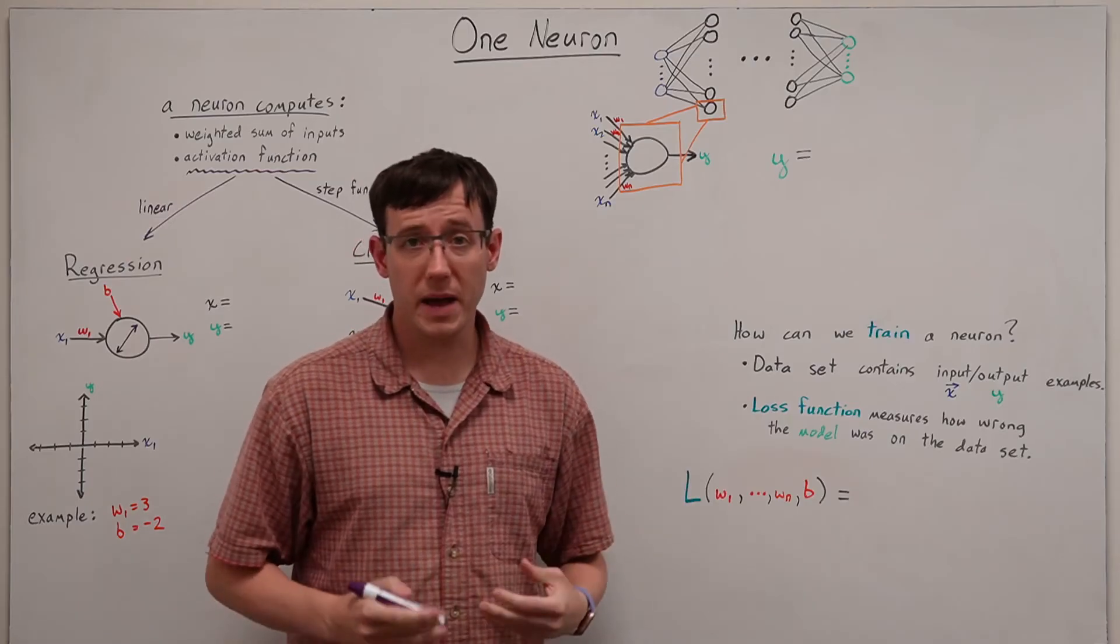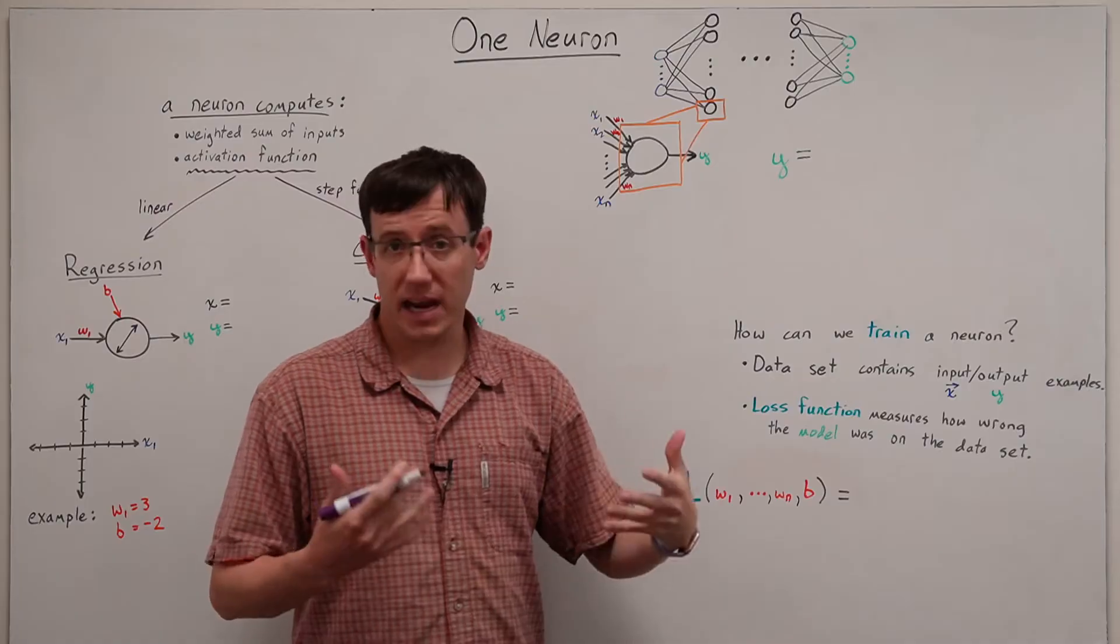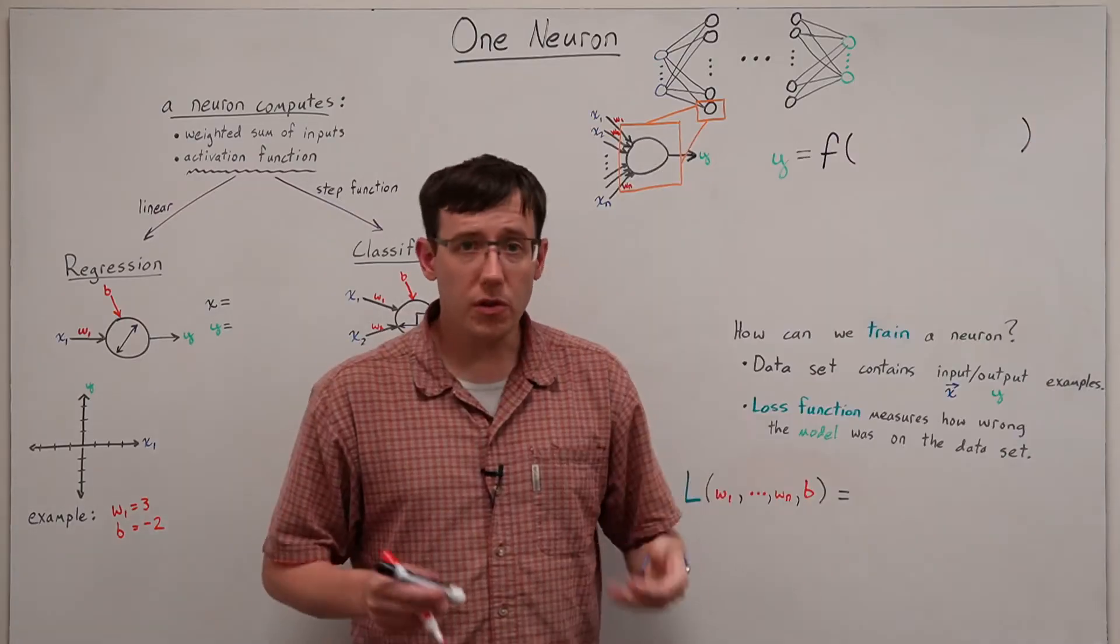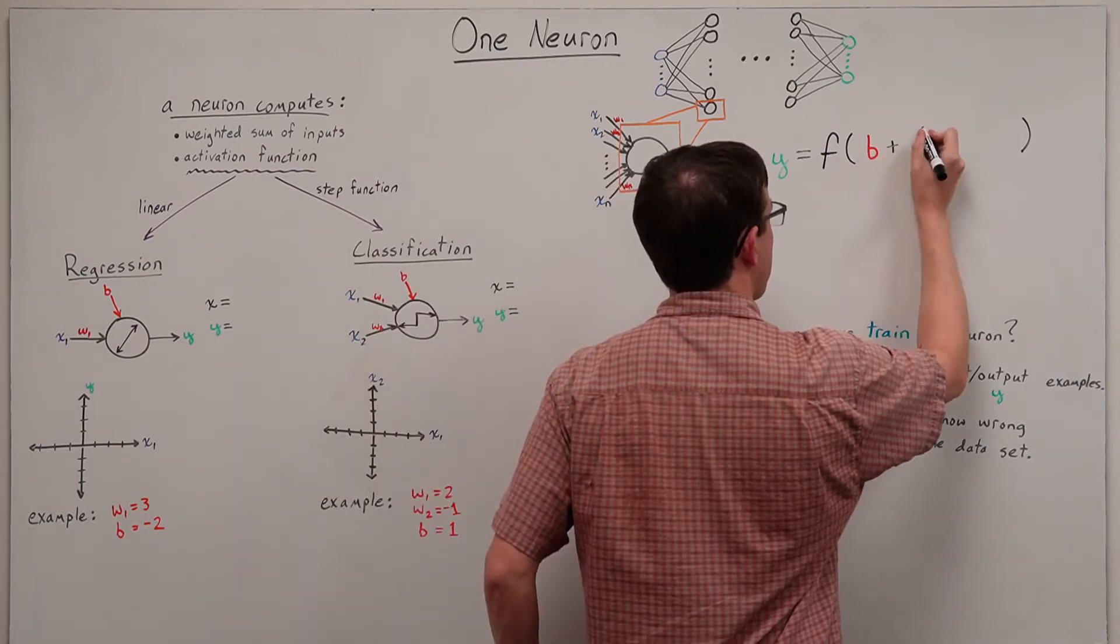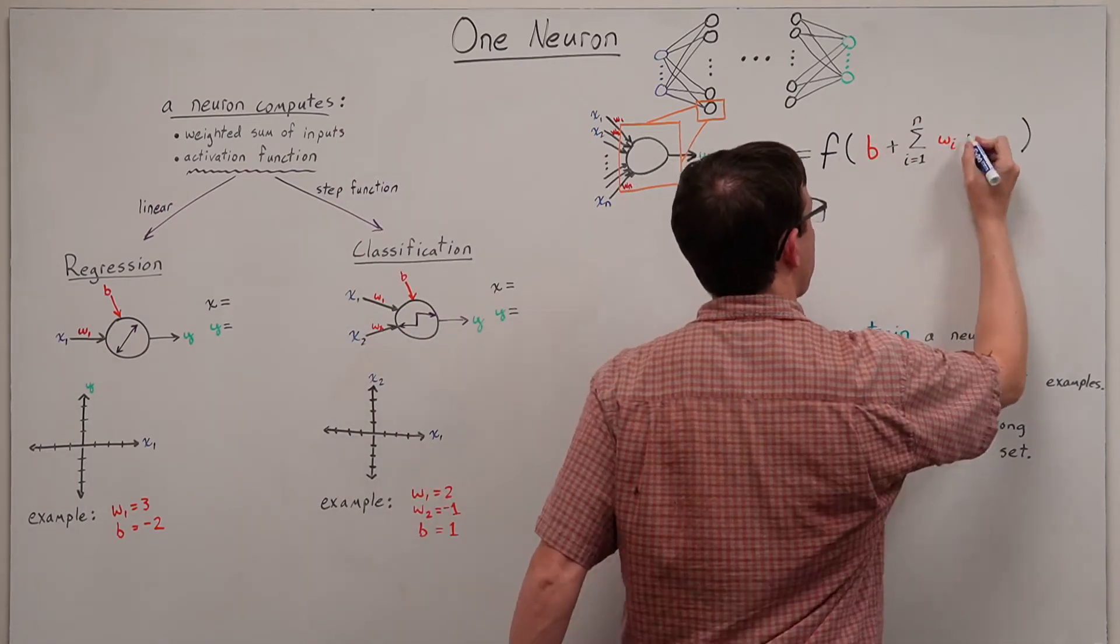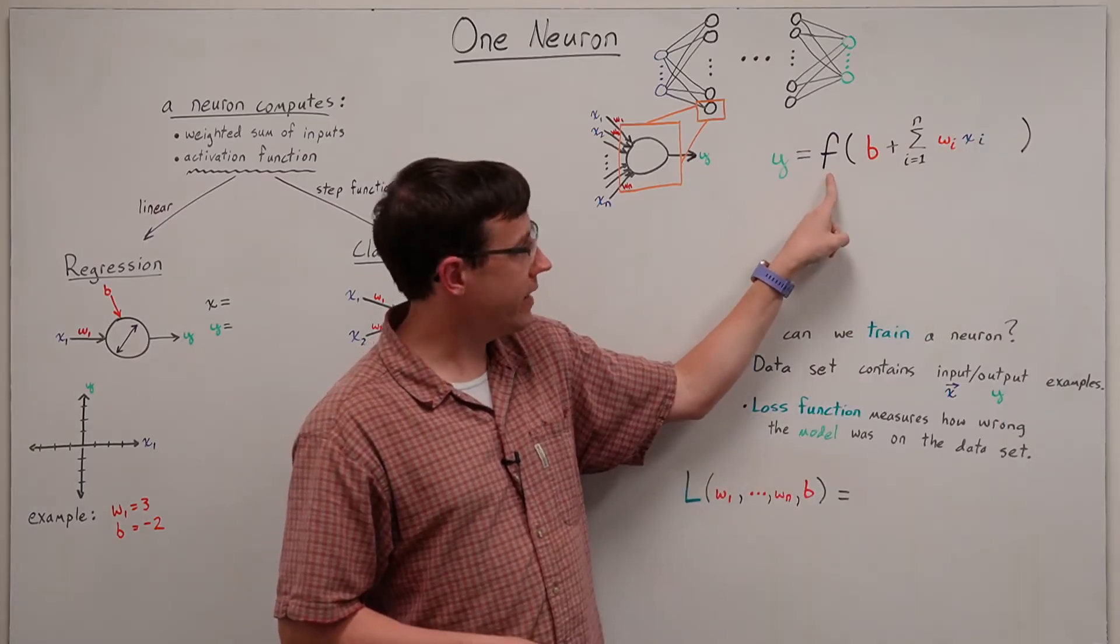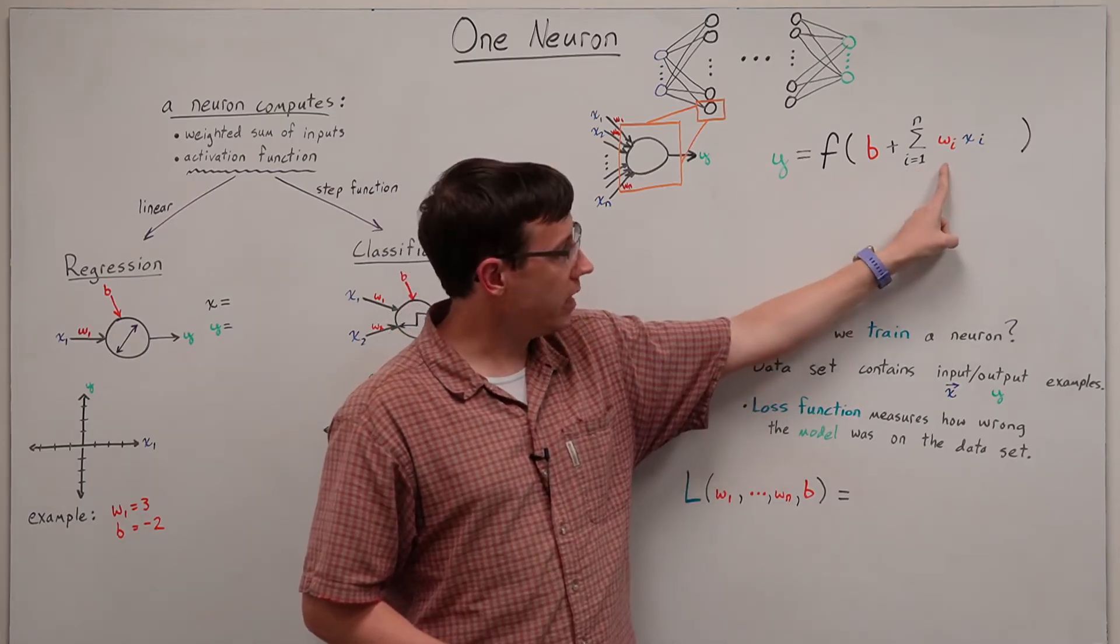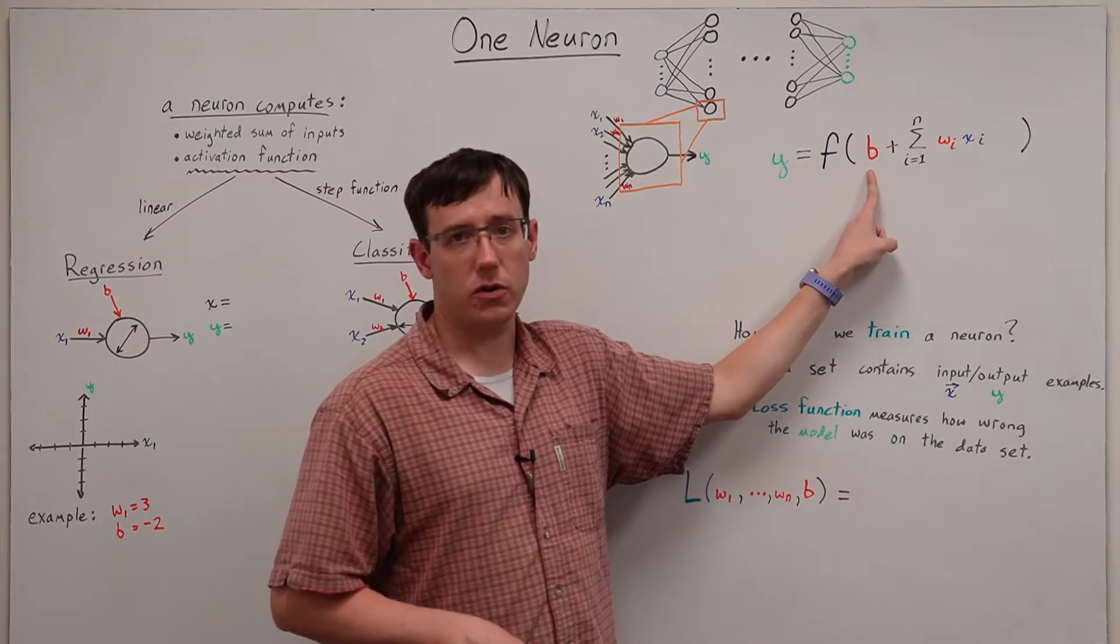To express this mathematically, our output comes from applying some activation function f to the result of summing up the weighted inputs. So our output is the result of applying the activation function to the sum of each weight times the input plus a bias term.